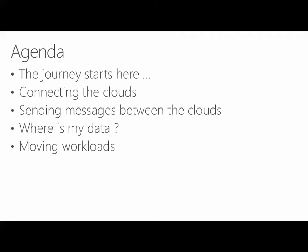The journey starts with a private cloud. We will very quickly see how you can connect the cloud through the network. After seeing how the network connectivity works, we will see how you can send messages between the applications running in the different clouds, using a component of Windows Azure — the Azure Service Bus. Moving from messages to data, we will see how you can synchronize your application data between different environments, and finally how you can move your workloads between private and public cloud.